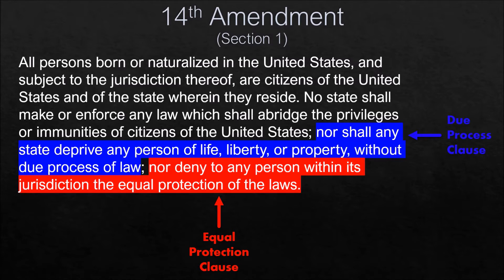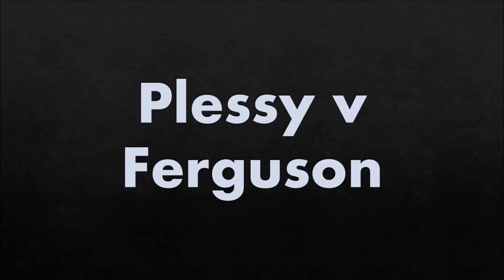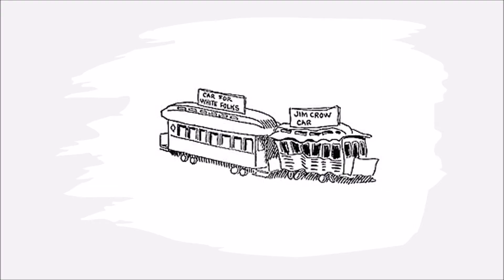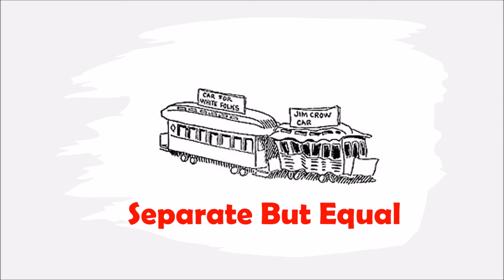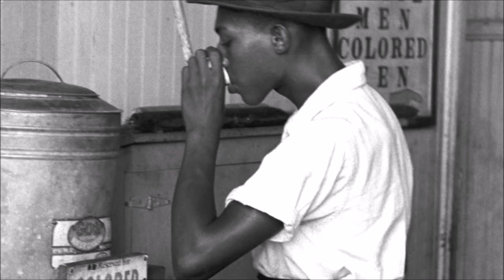Our first Supreme Court case is Brown v. Board of Education, which uses the equal protection clause of the 14th Amendment. Some quick context: the earlier case Plessy v. Ferguson involved segregated trains in the late 1800s. The court ruled 'separate but equal,' stating that segregation was acceptable since both sides were getting equal treatment. This led to the Jim Crow laws where just about everything was segregated by racial lines.